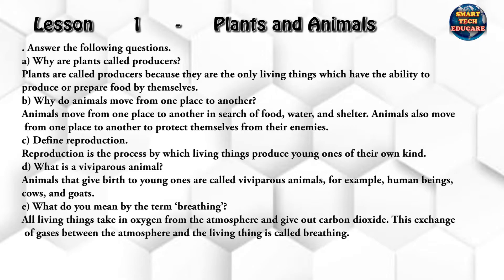What is a viviparous animal? Animals that give birth to young ones are called viviparous animals — for example, human beings, cows, and goats. What do you mean by the term breathing? All living things take in oxygen from the atmosphere.